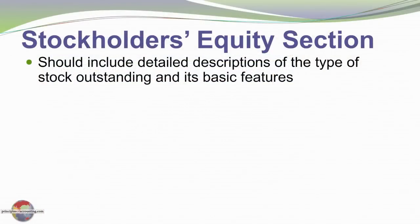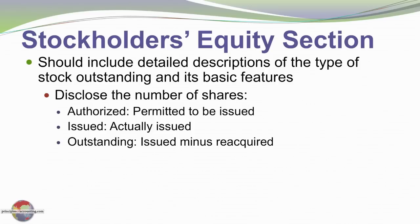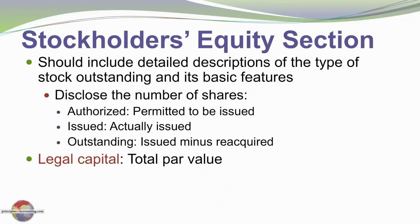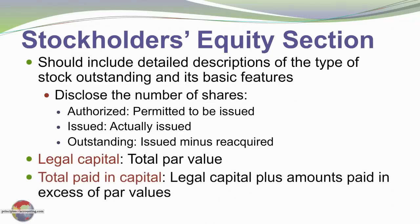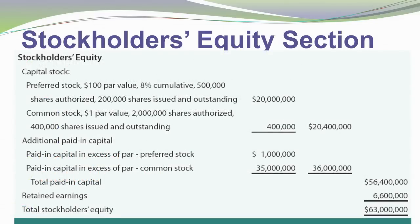Finally, let's look at the stockholders' equity section. It should include detailed descriptions of the type of stock and its basic features — the number of shares authorized, the number issued, and the number outstanding. Legal capital is a term used to mean total par value. Total paid-in capital is the legal capital plus paid-in capital in excess of par value. Here's an illustration of a stockholders' equity section that's fairly complex, with preferred stock and common stock with very detailed disclosures, additional paid-in capital on both classes of stock, and then retained earnings to arrive at total stockholders' equity.